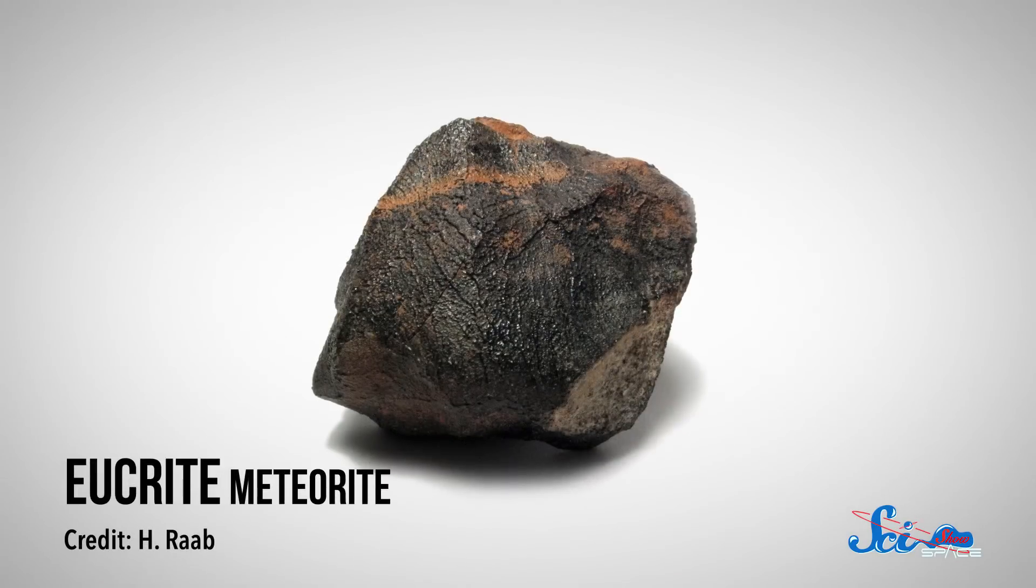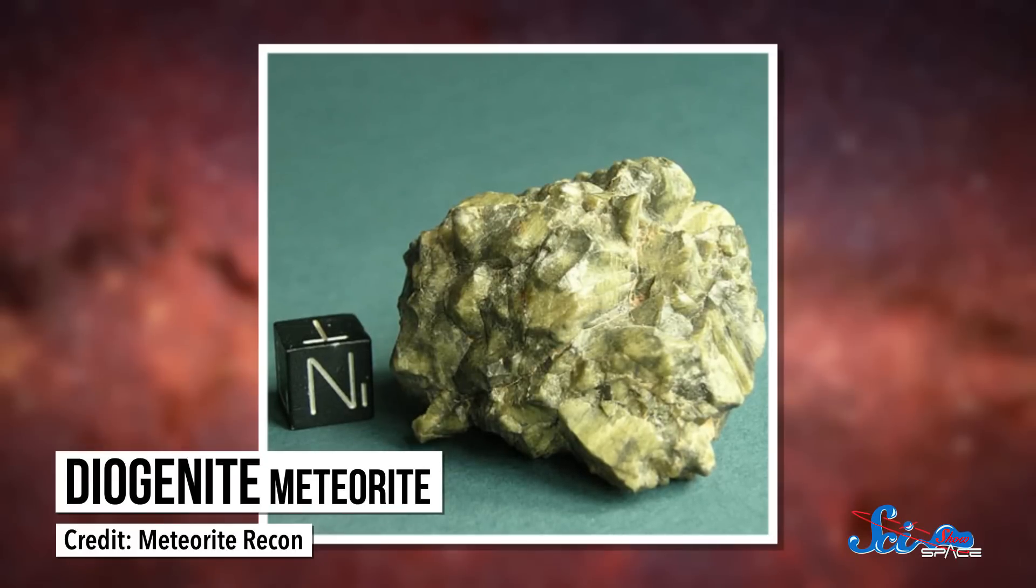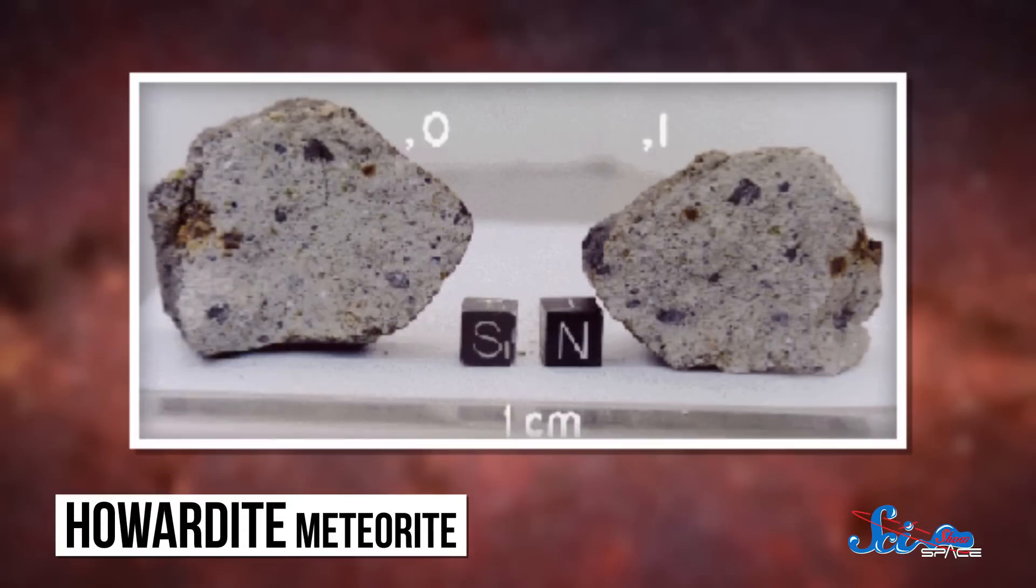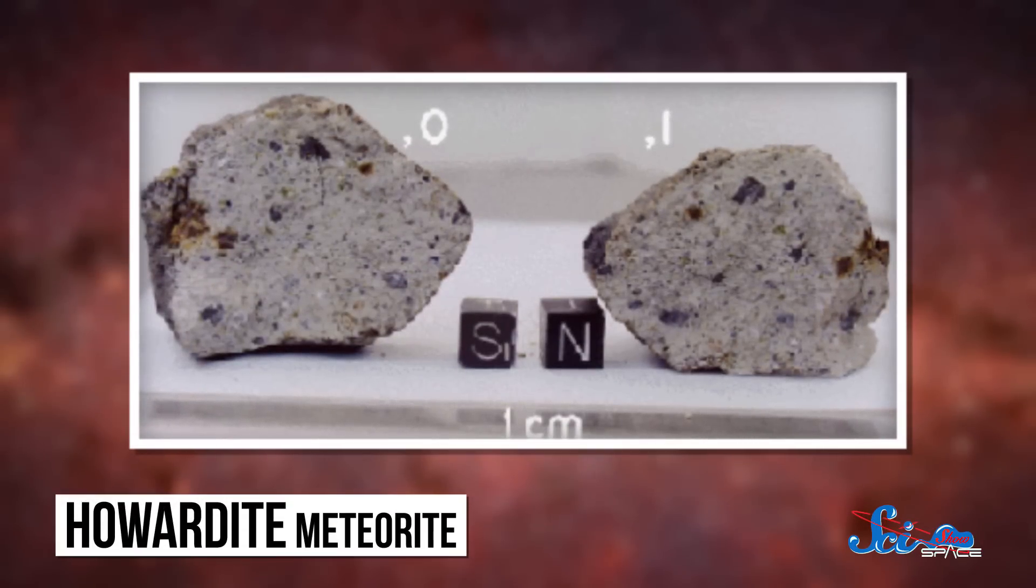Based on their composition, Eucrites could have come from the hardened lava on Vesta's surface, Diogenites could have come from the inside of the asteroid, and Howardites looked like a mix of the two, which could have happened when Vesta's crater was formed. And Dawn pretty much confirmed that was right.